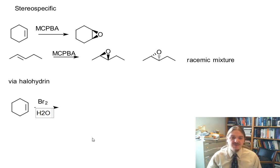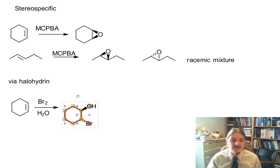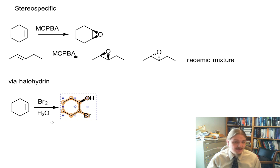more convenient to first form the halohydrin. So that's a reaction of an alkene with halogen in the presence of water. And this generates a chiral molecule, so we're plus enantiomer.